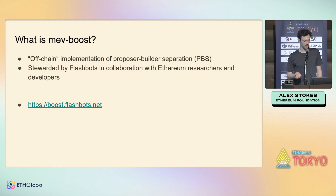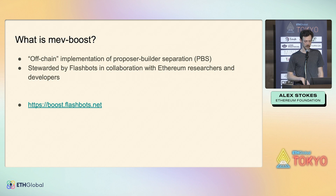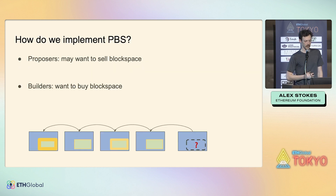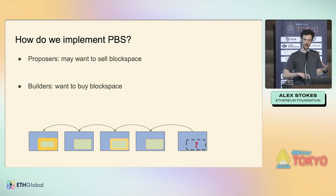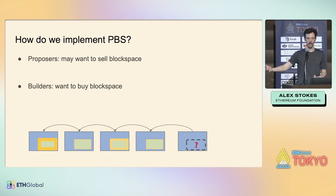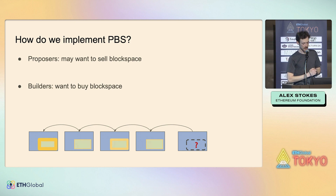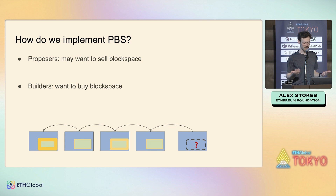So what is MEV Boost? It's an off-chain implementation of PBS stewarded by Flashbots, a big MEV R&D firm in the space. If you've heard of MEV you've probably heard of Flashbots. There's a link to get started. How are we going to actually implement this PBS thing? At the highest level of abstraction, we have proposers — validators who are actually minting blocks — and builders who are doing all the upstream work. The core problem is proposers want to sell their block space, and builders want to buy it. Markets are a great way to structure that problem.